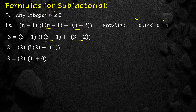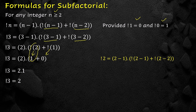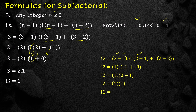Sub-factorial of 3 equals 2 into (sub-factorial of 2 plus sub-factorial of 1). Sub-factorial of 2 is 1 and sub-factorial of 1 is 0, so sub-factorial of 3 equals 2 into (1 plus 0) equals 2. To elaborate why sub-factorial of 2 is 1: using the formula, sub-factorial of 2 equals (2 minus 1) into (sub-factorial of 1 plus sub-factorial of 0) equals 1 into (0 plus 1) equals 1. Therefore sub-factorial of 2 is 1.